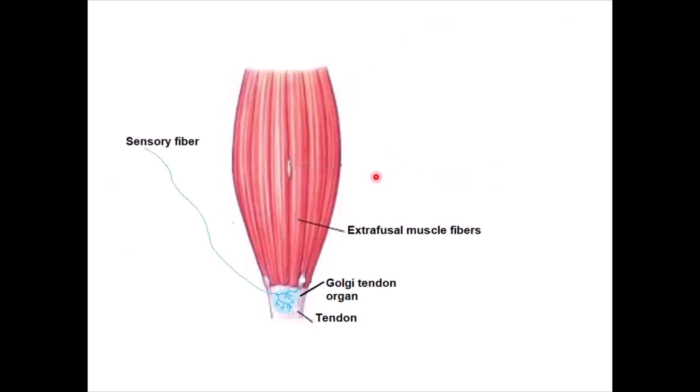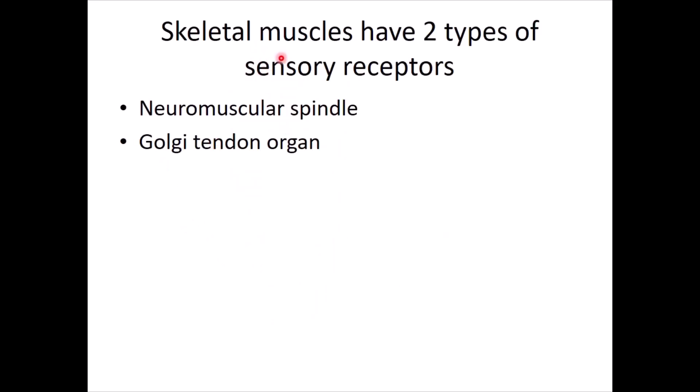Now, another one is actually located inside the tendon itself. It's called the Golgi tendon organ. It's called Golgi. Now, if you remember from cell biology, we have something called Golgi apparatus, which package usually produced proteins into vesicles. Well, it was discovered by the same scientist. So that's why it has the same name of Golgi. Now, these structures are located in the tendon, and they also have sensory fibers. So they are also sensory receptors. So skeletal muscles have not one, but two types of sensory receptors.